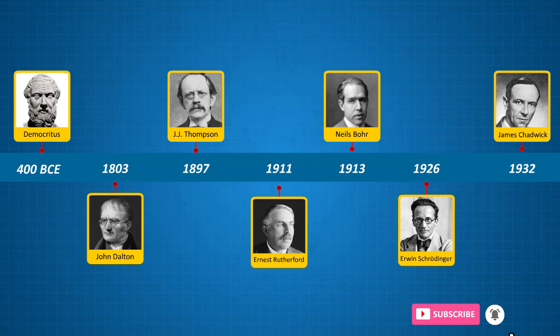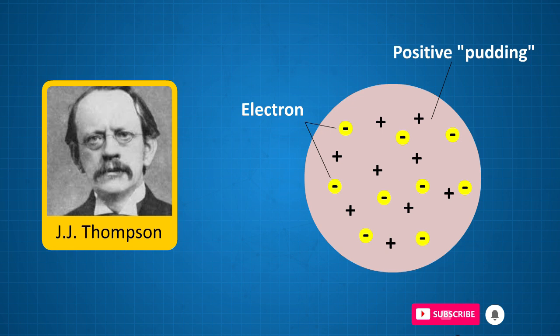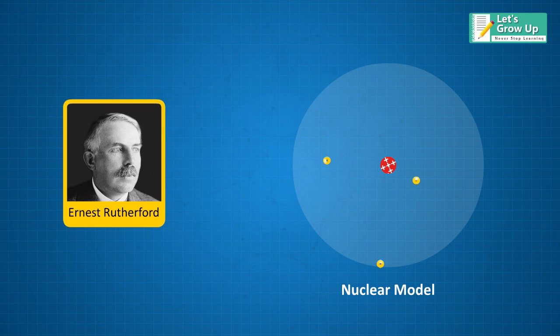A few years later, in 1897, J.J. Thompson was the first scientist to discover a subatomic particle, the corpuscle, which was later named the electron. In 1911, Ernest Rutherford developed the nuclear model of the atom.